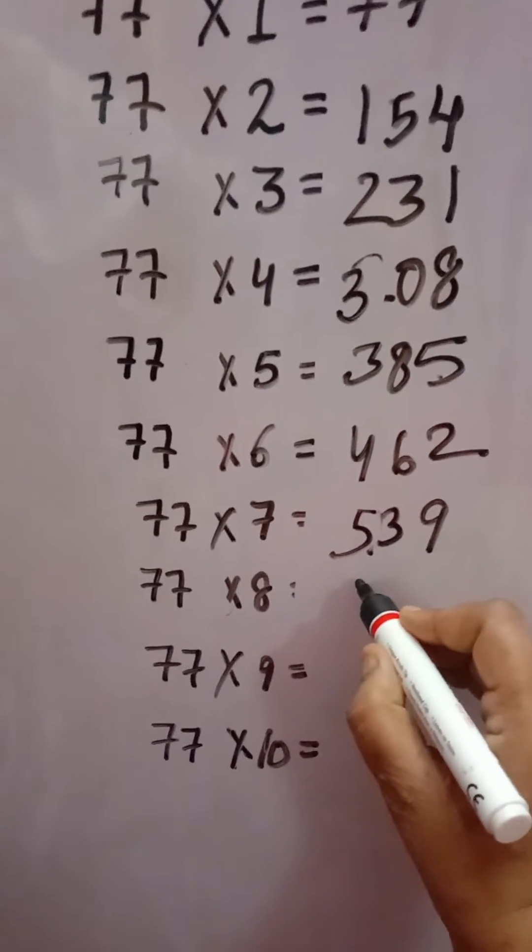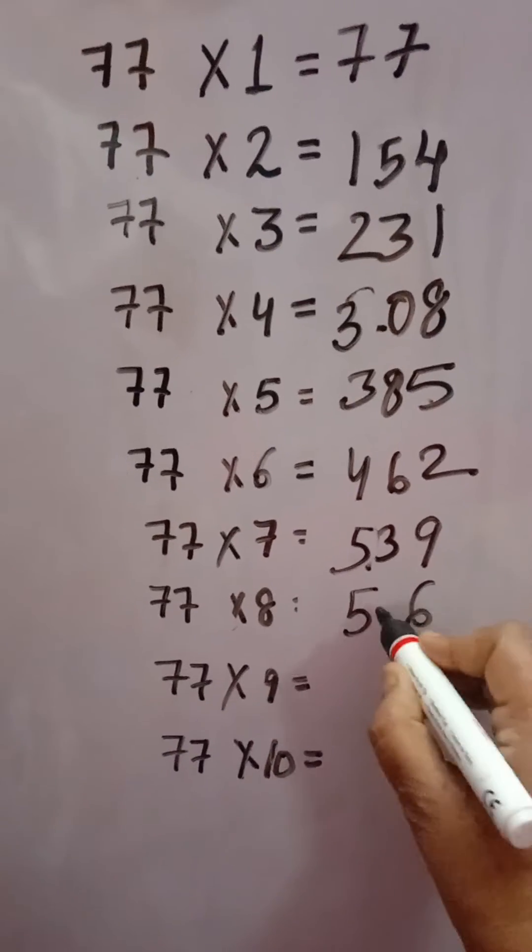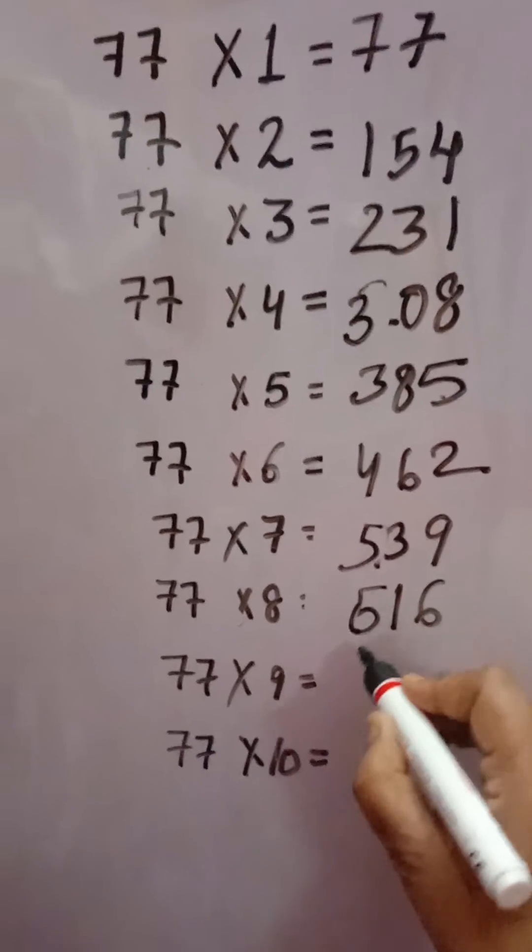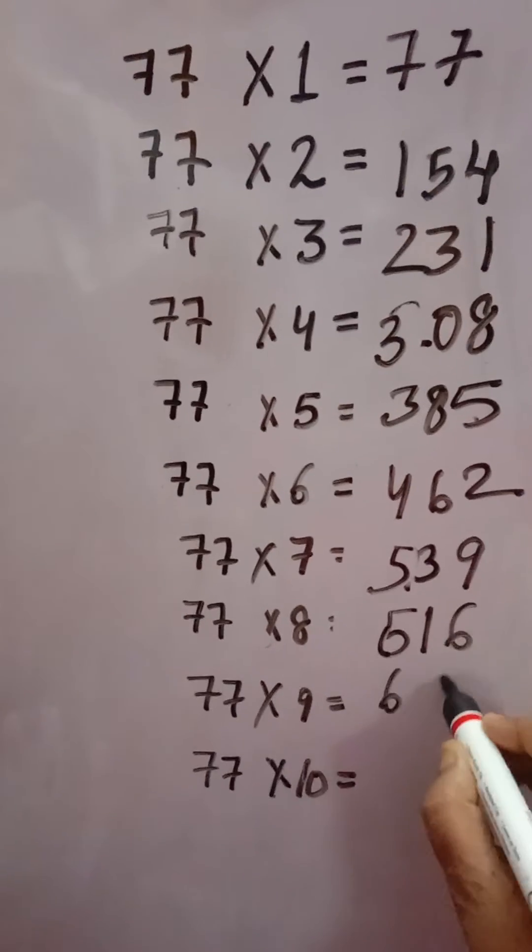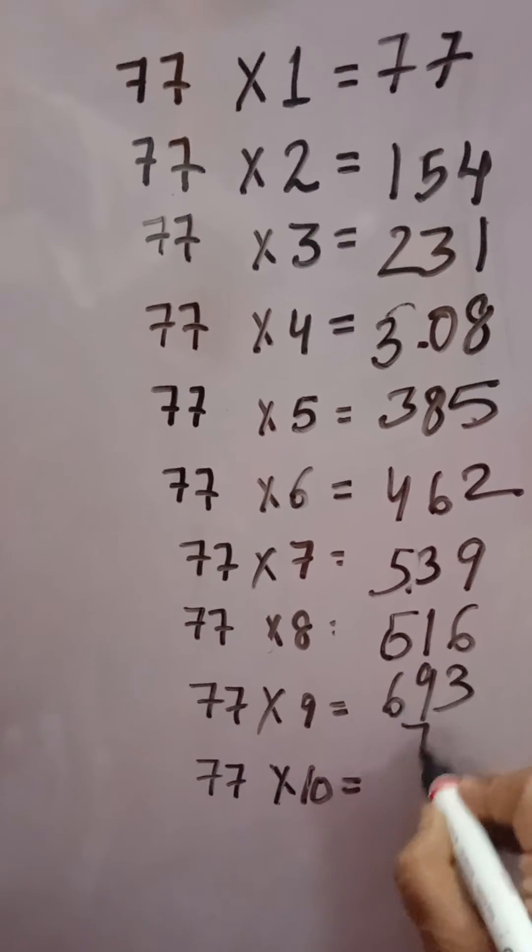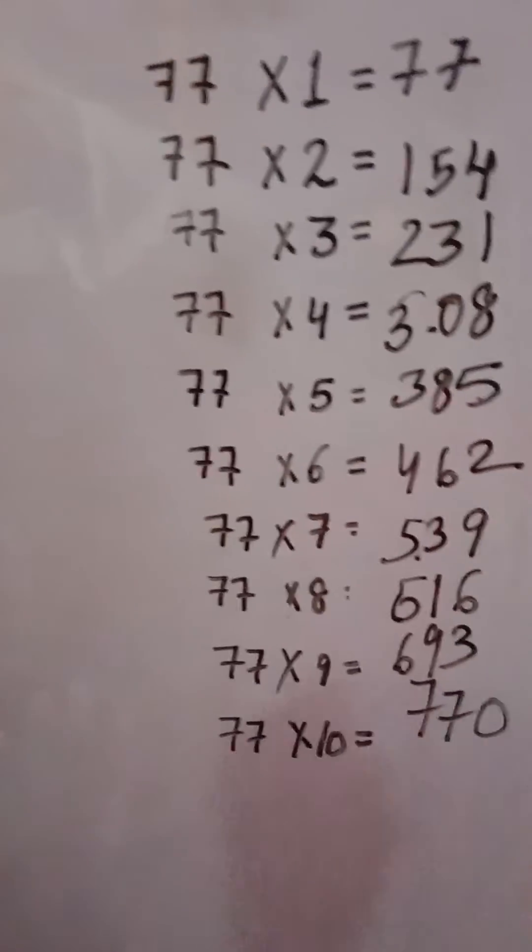7 times 8 is 56, 5 plus 6 equals 11, carry 1, so 616. 7 times 9 is 63, 6 plus 3 equals 9. 77 times 10 is 770. Thank you.